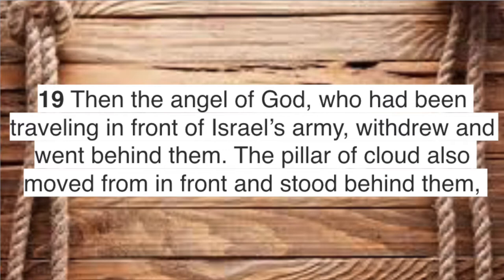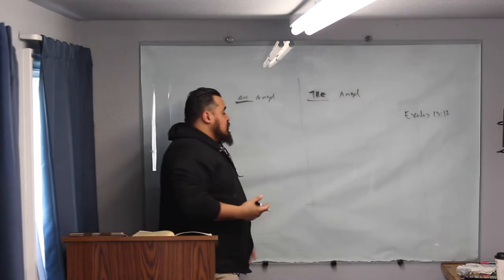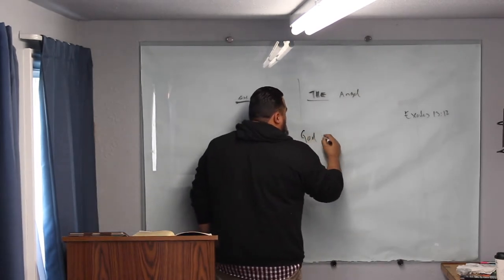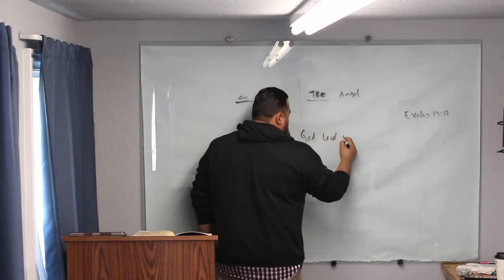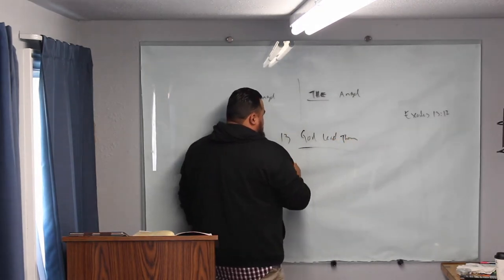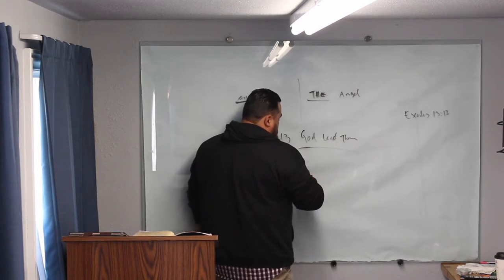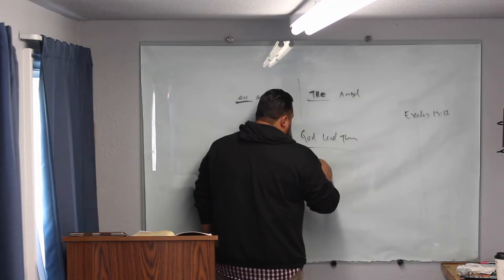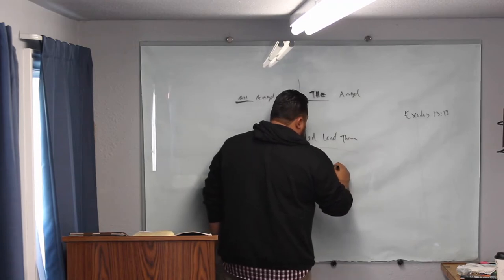And the Lord went before them by day in a pillar of cloud to lead them along the way and by night in a pillar of fire to give them light. Now, let's go to 14:19. Go ahead and read. Then the angel of God who was going before the hosts of Israel moved and went behind them. And the pillar of cloud moved from before them and stood behind them. So where was... we see a clear distinction that in 13 it says that God was in front or led them. And then verse 14 it says what? Who was in the front? The angel.